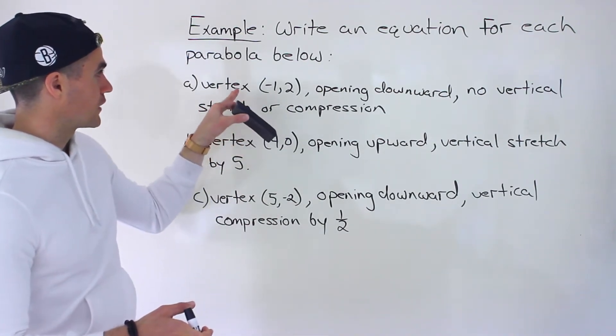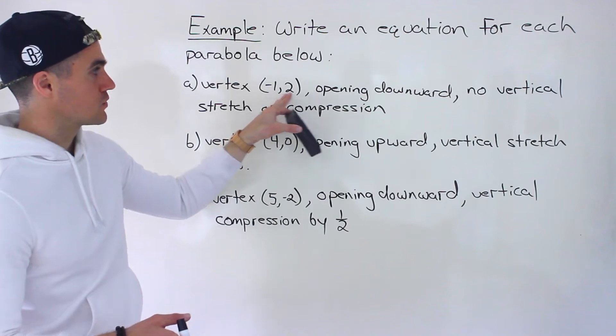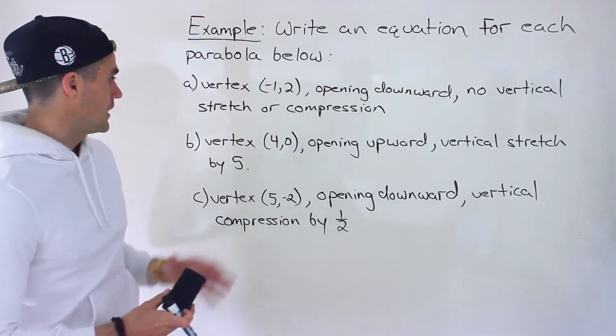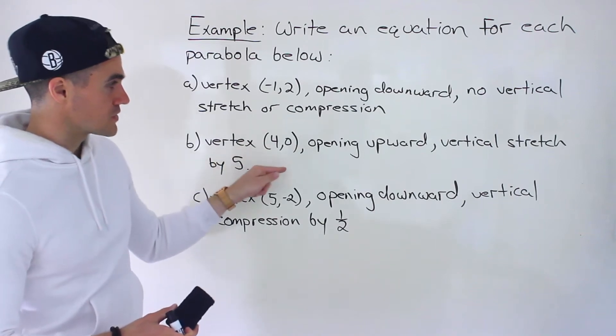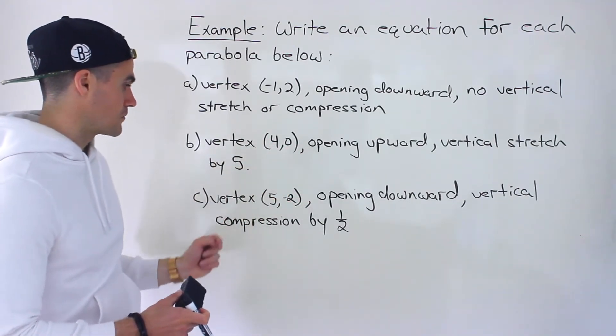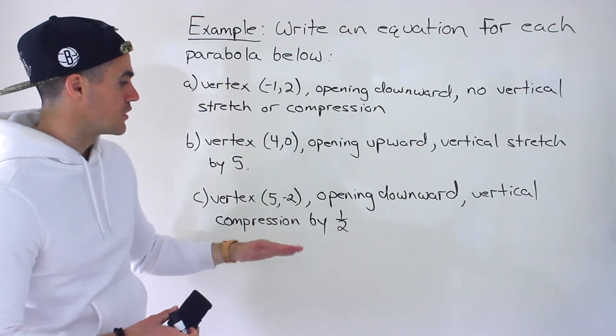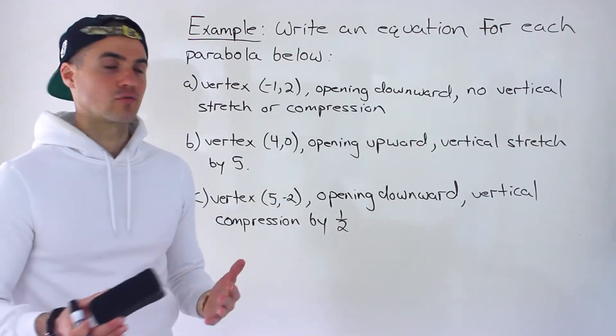So notice in part A, we have a vertex of negative one and two. We're told it's opening downwards. There's no vertical stretch or compression. In part B, we're told there's a vertex of four and zero, opening upwards, vertical stretch by five. And then in part C, we got a vertex of five negative two. It's opening downwards, vertical compression by one over two.